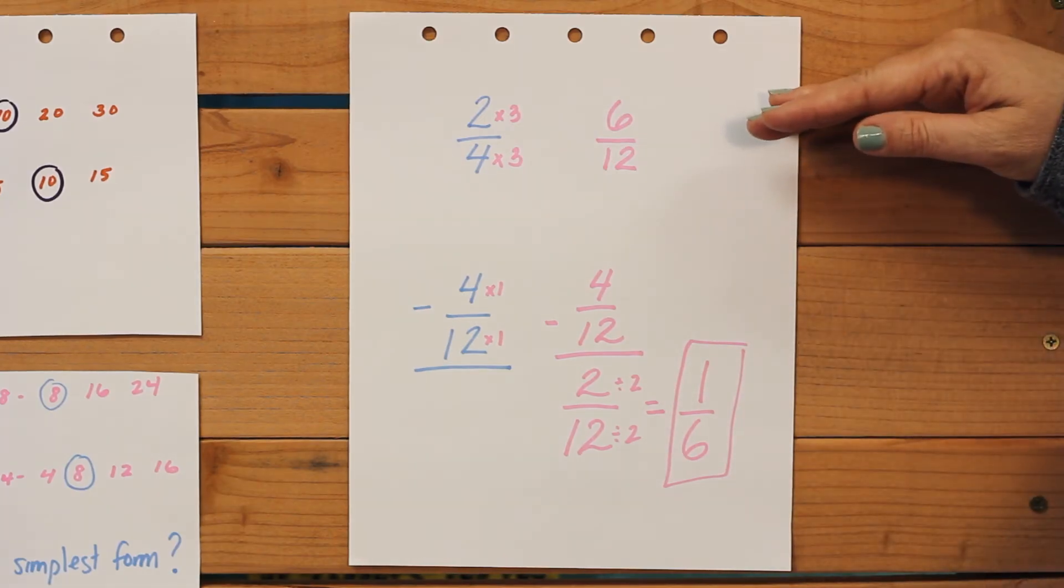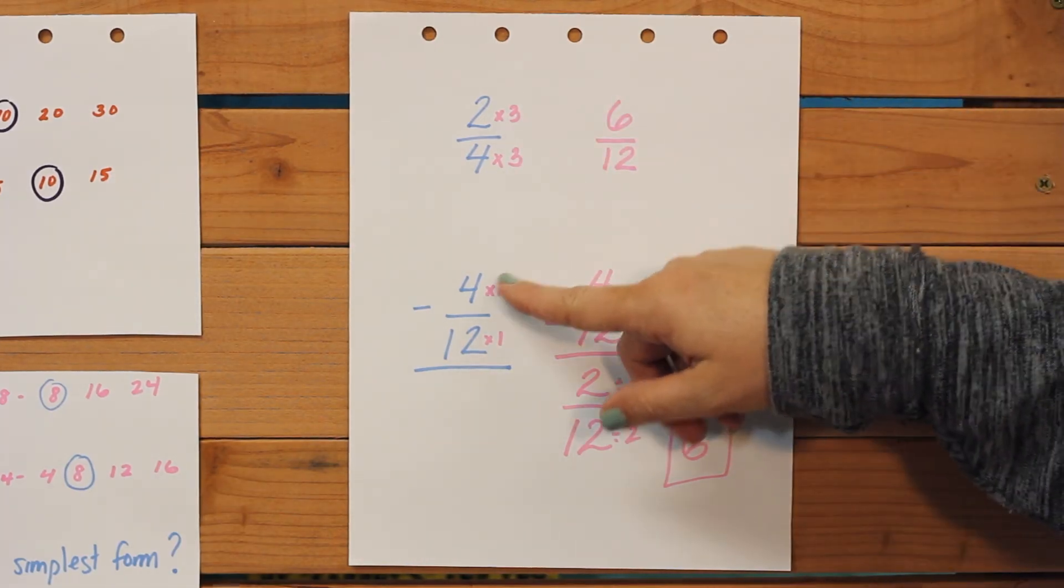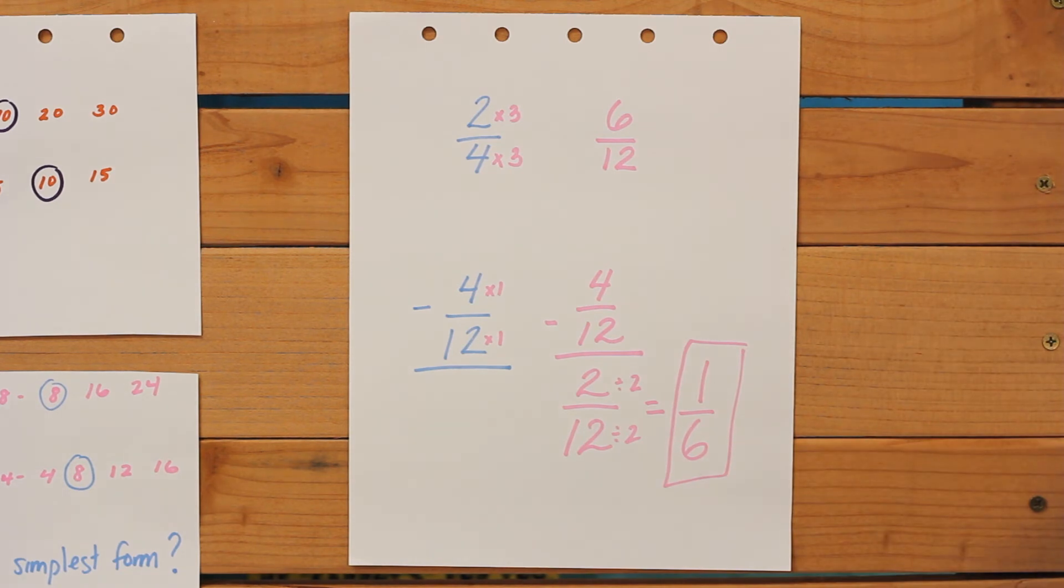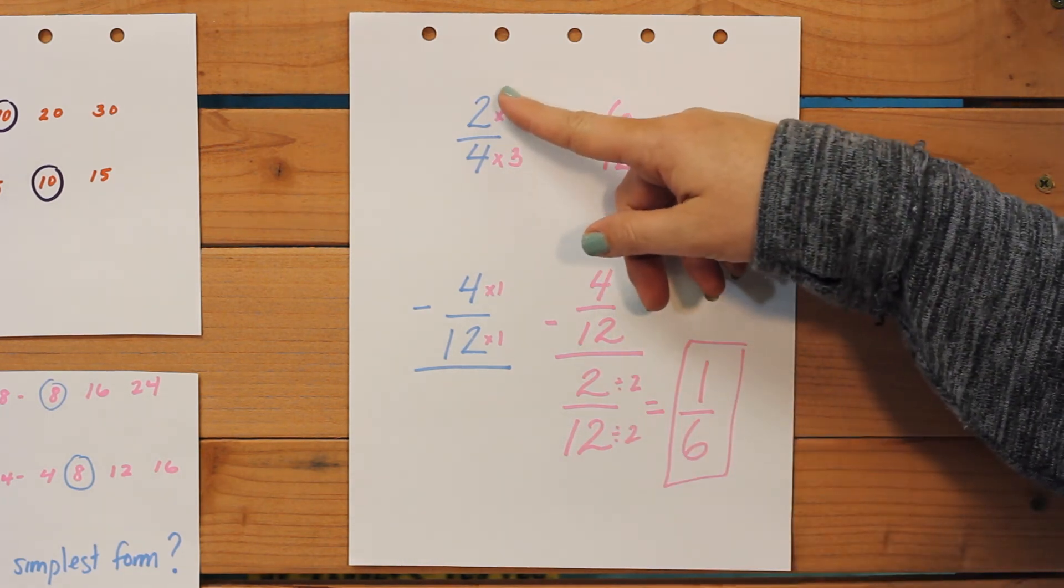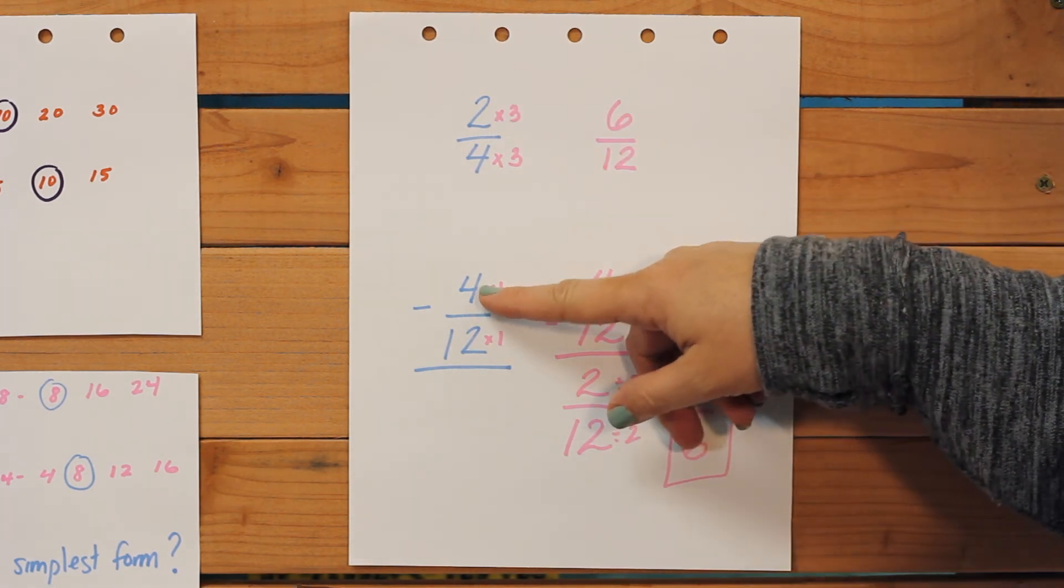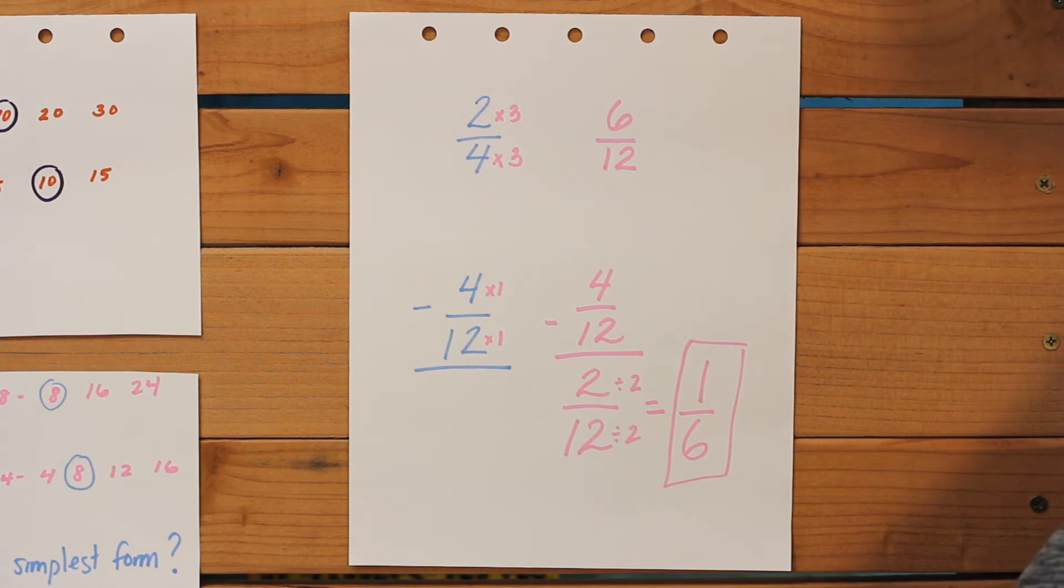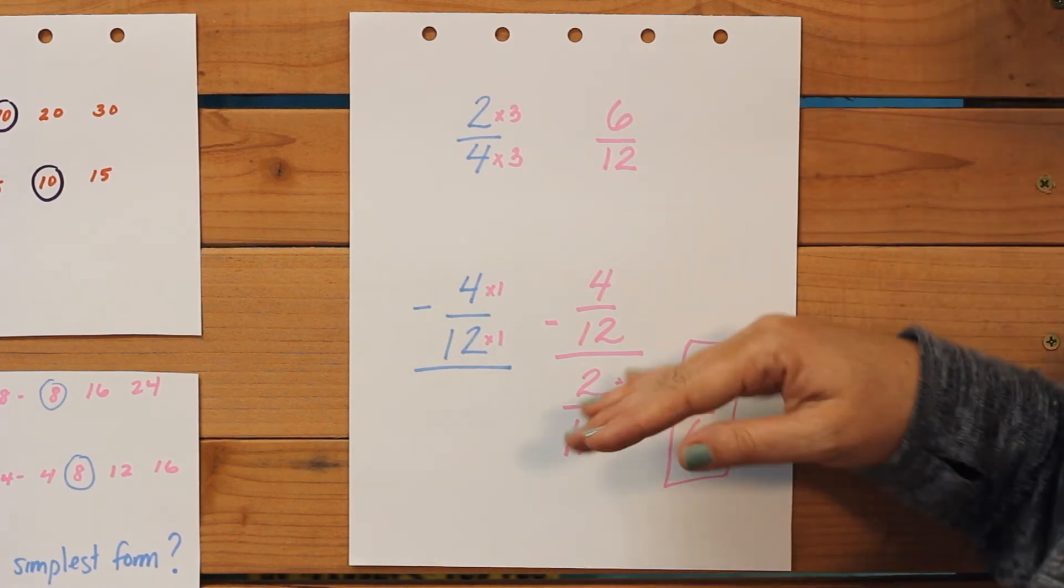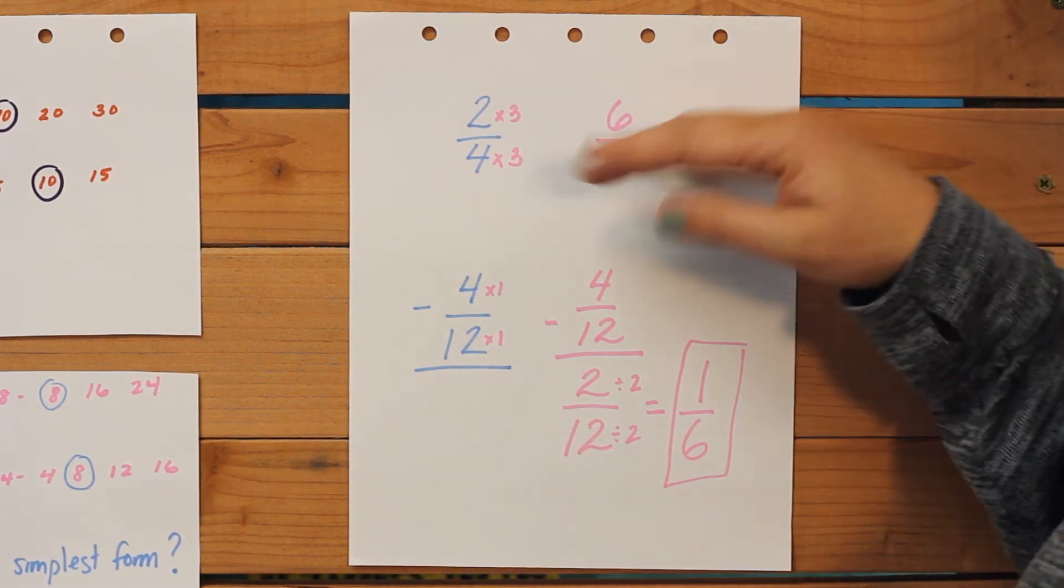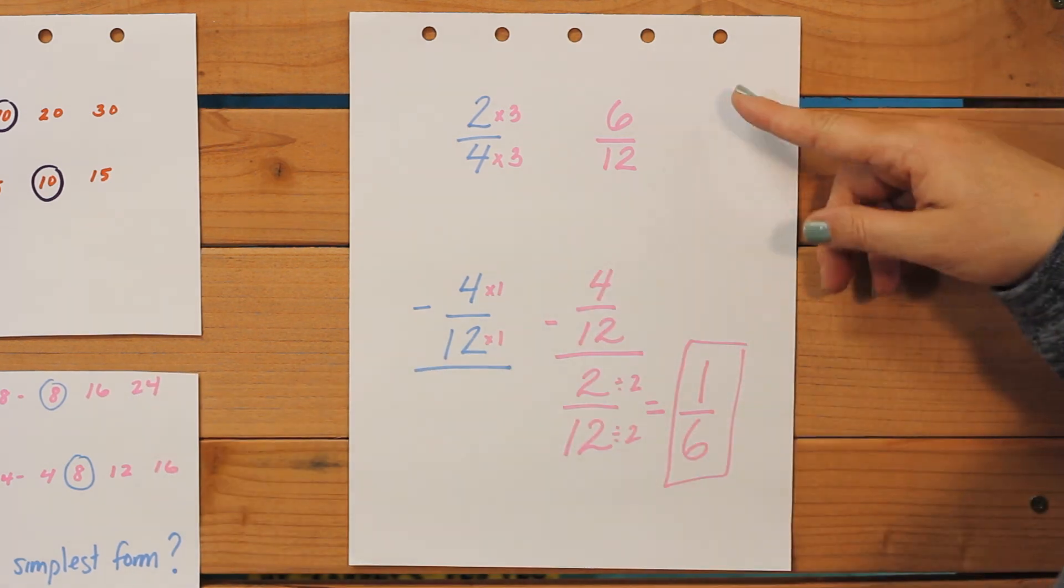All right, our last example is 2/4 minus 4/12. Now you might think that's kind of weird. How can you subtract two minus four, four and four minus twelve? But when we look for our common denominator, you're going to see that this is going to work out just fine.